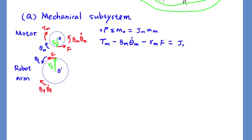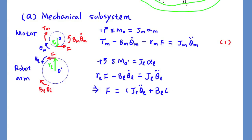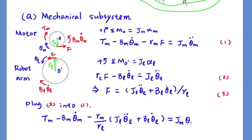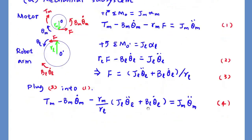Then, based on Newton's second law for rotational motion, we can list equations for the first gear. Similarly, assuming equation positive to be counterclockwise, we can list equations for the robot arm gear. From here, we can solve for the force F and plug this F into equation number 1.